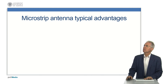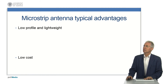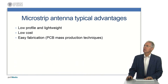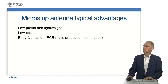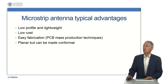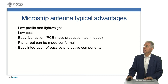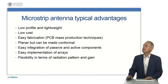Here is a list of some of the most typical microstrip antenna advantages: low profile and lightweight; low cost; easy fabrication using PCB mass production techniques; planar but can be made conformal to non-planar geometries; easy integration of passive and active components; easy implementation of arrays; and flexibility in terms of radiation pattern, gain, and polarization.